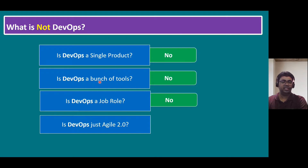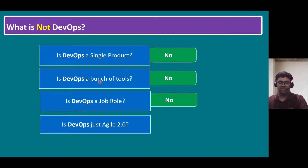Is DevOps just agile 2.0? We just reviewed the evolution: monolithic architecture used the waterfall model, the second era used agile, and in the latest era it is not agile 2.0 — it is the DevOps model. DevOps is a set of best practices methodology, so the answer to all these 'is it just X?' questions is no.